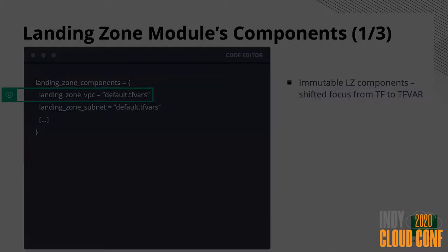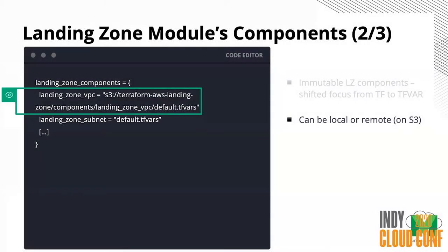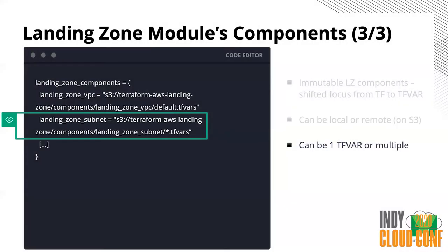The key-value pairs: you have the component name on the left and the path to the TFVars files where it's stored on the right. The var file can be stored locally or it can be remote on S3. It can be one TFVars file per component or it can have multiples. If it's a local folder, you just put the path to the local folder and use the asterisk to find all the TFVars files in that particular path.